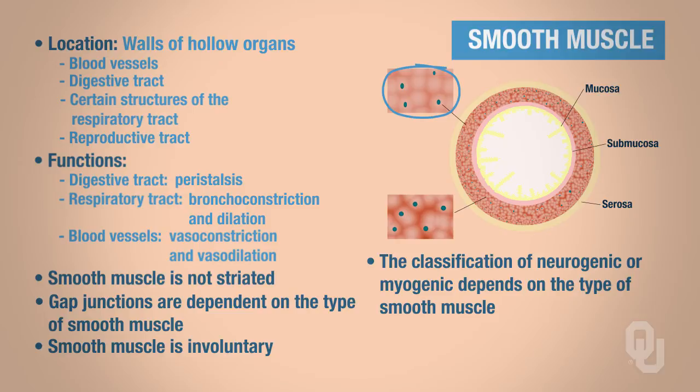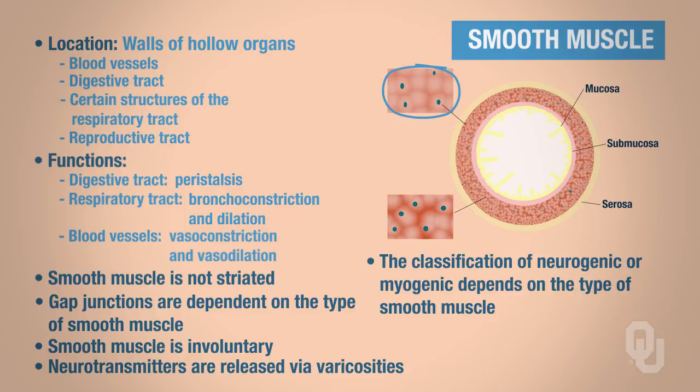In the earlier material, you learned that both smooth and cardiac muscle are part of the autonomic nervous system, the ANS. Neurotransmitters are released by what structure? Because it's the autonomic nervous system, neurotransmitters are released via varicosities.